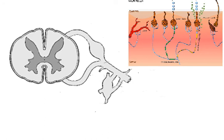Assalamu alaikum, welcome all to Easy Human Interview channel. In this video I discuss the grey rami and white rami communicants. This is the cross section of the spinal cord at the mid-thoracic level. This is the posterior horn, this is the anterior horn, this is the lateral horn. The lateral horn contains the preganglionic neuron of the sympathetic nervous system.